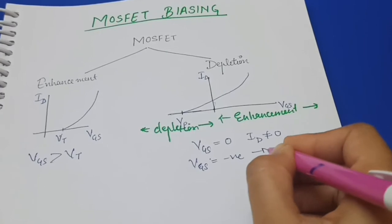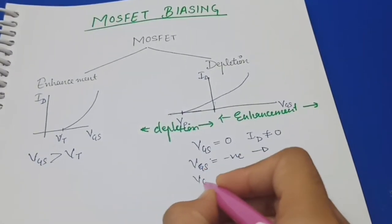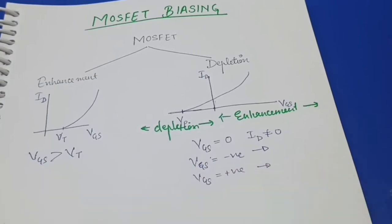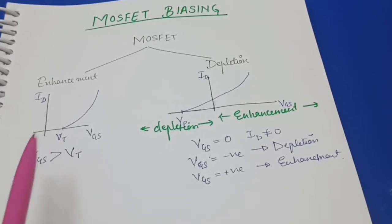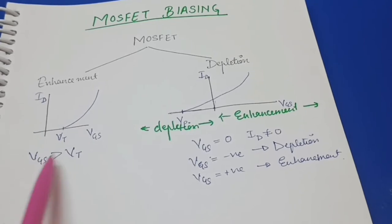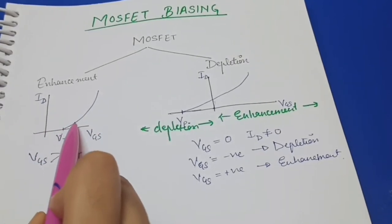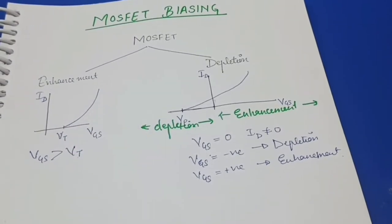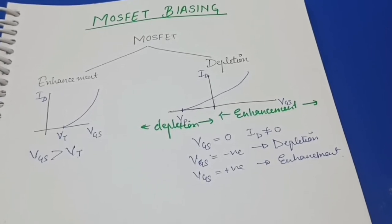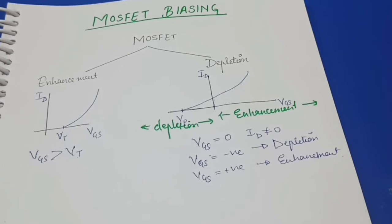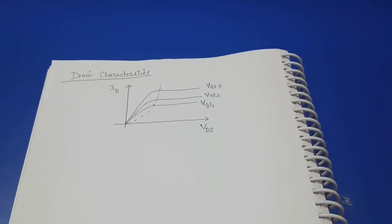For VGS negative, the depletion MOSFET operates in depletion mode, and when VGS is positive it operates in enhancement mode. For enhancement MOSFET, it only operates when VGS is greater than VT, and then the drain current increases as we increase gate to source voltage. Enhancement MOSFET can be biased using a gate bias circuit or a voltage divider bias circuit. In this video we will discuss these in detail.